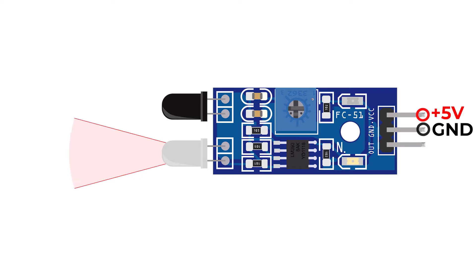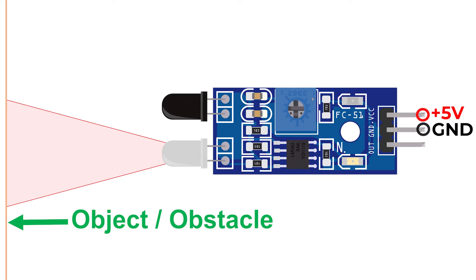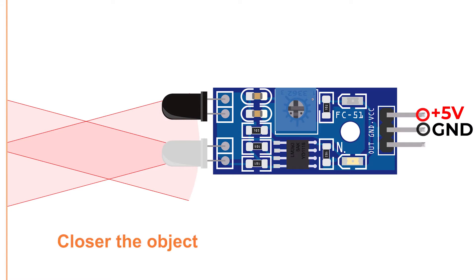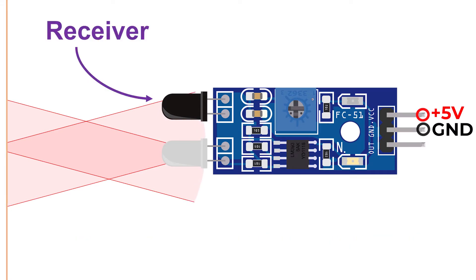It emits infrared light whenever the sensor is powered. The emitting light falls on objects in front of it, just like when a flashlight is turned on. As we know, light falling on any object tends to reflect, and that's how we are able to see that object. So if there is any object in front of the infrared LED, then the light gets reflected and some of it comes back at the sensor. Closer the object, more the reflected infrared light.